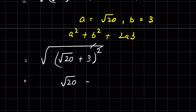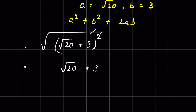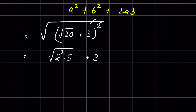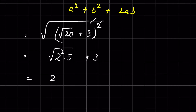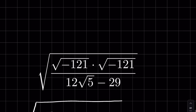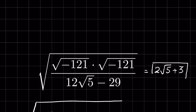Removing the square root with the square gives (√20 + 3). We simplify √20 = √(4 × 5) = 2√5. So the final answer is 2√5 + 3. How did you solve it? Let me know in the comment section. Thanks for watching.